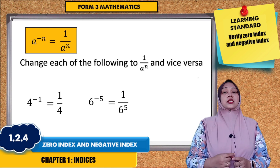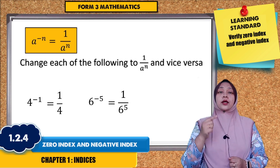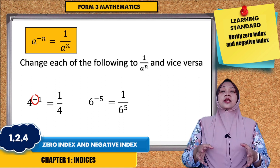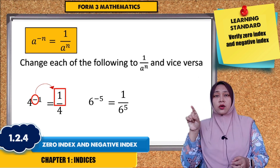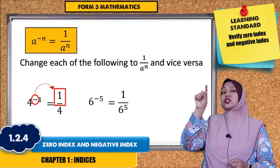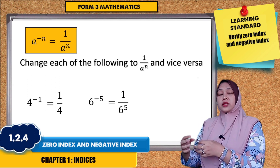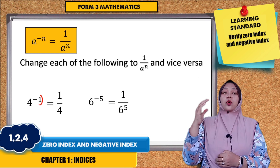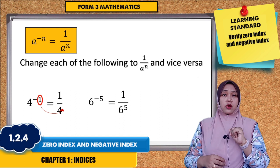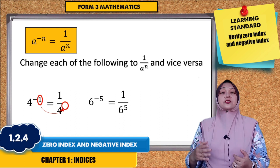The first example: 4 to the power of negative 1 gives 1 over 4. Negative power will change to 1 over. We bring 4 as the numerator, so the answer is 1 over 4. Why is there no power for the 4? Because 4 to the power of 1, we write it as 4 only.